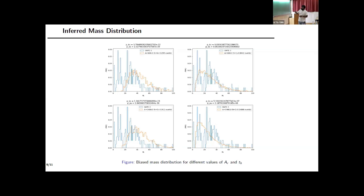Results are shown for different merger rate model parameters A_R and T_h. For all values of A_R and T_h considered, the lensed simulated population does not match the GWTC-3 catalog — p-values remain quite low. Overall, for any value of A_R and T_h we tried, the lensed black hole population never looks close to the LIGO detections.